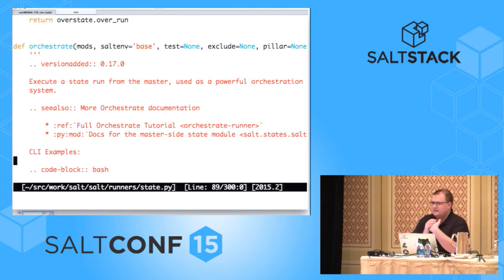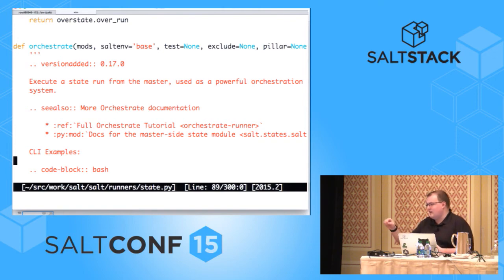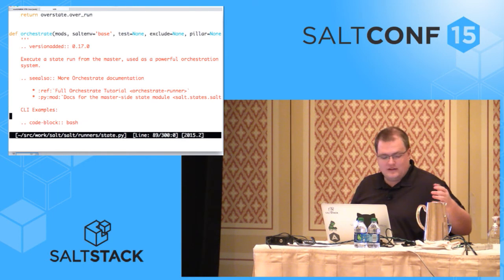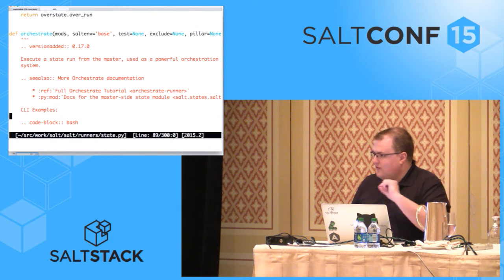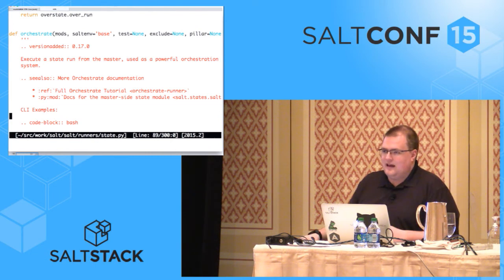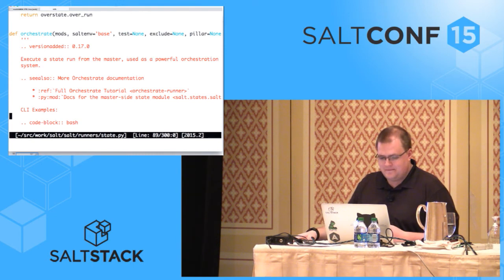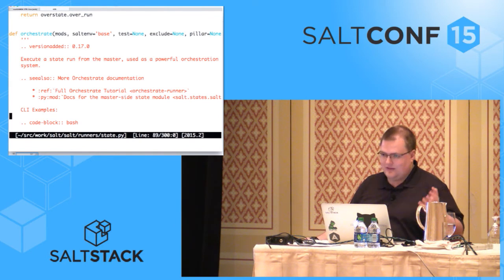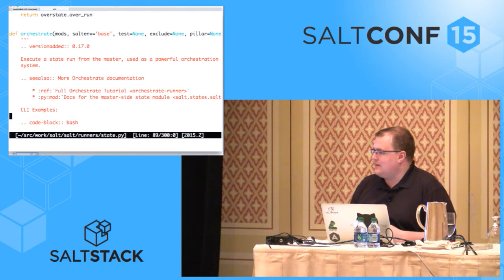Runners are not quite as easy to deploy as execution modules — you can't just stick them in your file server yet. There's an open feature request to create an _runners directory. Right now you either have to stick it inside of the Salt install or define the extension_modules directory for runners in the master config, and that will allow you access to them. The use cases for custom runners are a little bit less common than custom execution modules.